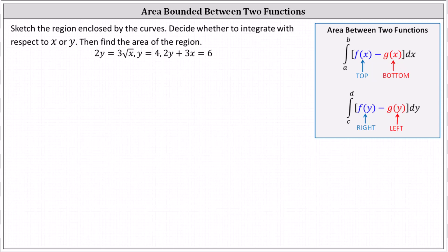The area between two functions with respect to y has integrand f of y minus g of y, where f of y is the function on the right and g of y is the function on the left.